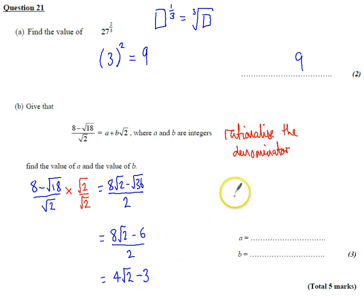To get it into the a plus b root 2 form, I'm going to write it the other way around, so the number first is minus 3, and then 4 root 2. That tells me that a must be minus 3, and b, the number in front of the root 2, is positive 4. And that's it, finished.